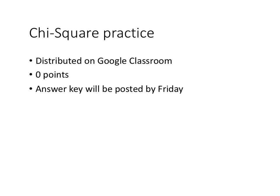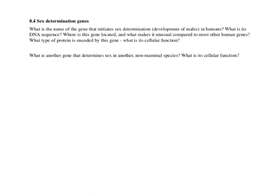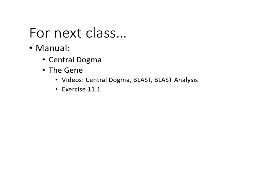For more chi-square practice, I've posted a Google Sheet on Google Classroom with six or seven tabs of different questions. It's not worth points — I'll post the answer key on Friday. We'll do question 8.4 next time as we start the central dogma — transcription and translation. More readings and videos to watch for next class, and one more exercise to try. See you next time.